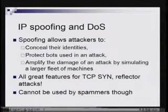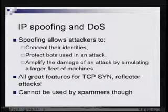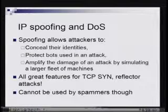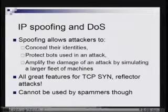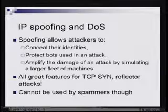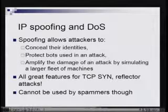Why is spoofing an interesting problem? Spoofing allows attackers to conceal their identities, because when a host receives the packet, it has no idea who actually sent it. This is often used when a botnet — a network of compromised machines — is used to launch a denial-of-service attack; spoofing would be used to protect the botnet. Of course, if you're using the botnet to send spam, you would not be able to use spoofing.